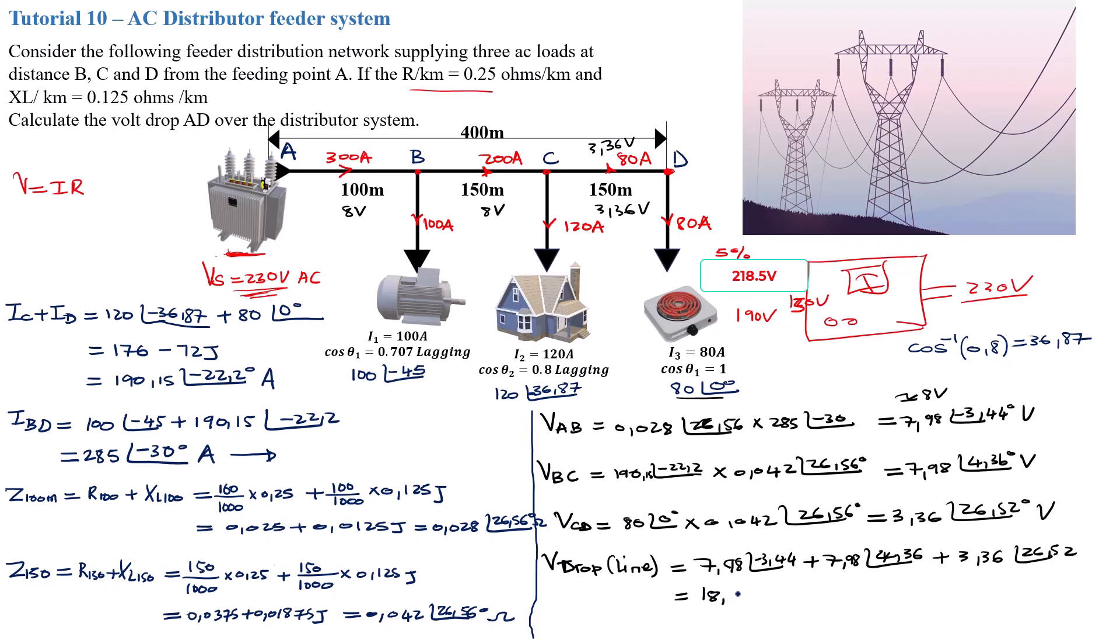Summing all of this up gives you a voltage drop of 18.99 with an angle of 4.9 degrees. You can basically approximate this to be 19 volts with an angle of 5 degrees. So that is basically the voltage drop across this line here.